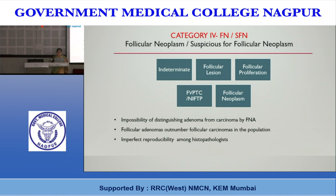This variability resulted from fear — when reporting as neoplasm it might turn out to be carcinoma, and there was no way to distinguish adenoma from carcinoma using FNAC alone. Follicular adenomas outnumber follicular carcinomas in the population but have a deceptive cytologic appearance. Additionally, there is imperfect reproducibility of these lesions among histopathologists.